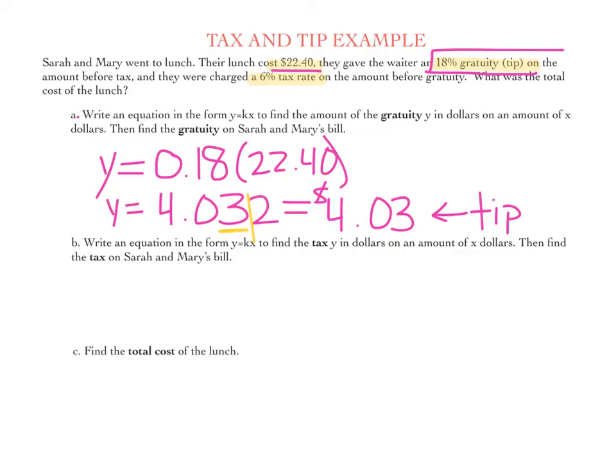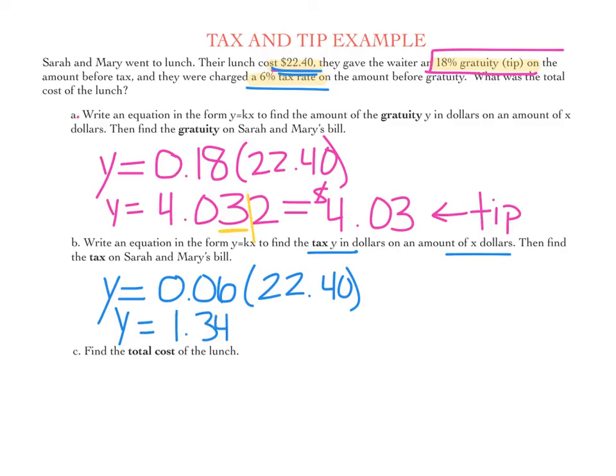Next, we want to write an equation to find the tax in dollars on an amount of X dollars, and then find the tax on Sarah and Mary's bill. So to find the tax, we're going to say Y equals the tax rate written as a decimal, 0.06, times X, or in this case our original lunch cost was $22.40. And so I'm going to find 6% of that by multiplying these numbers, and I get Y equals 1.344, which again we're going to round to the nearest hundredth, which is $1.34. Now that is the amount of my tax.